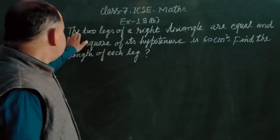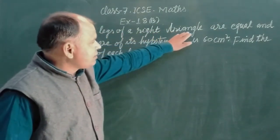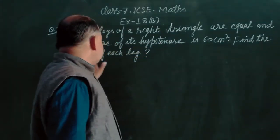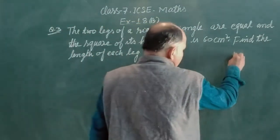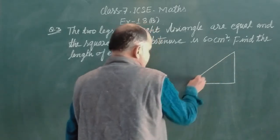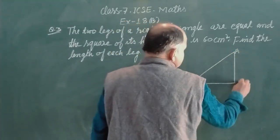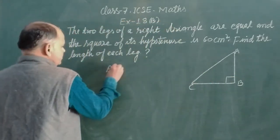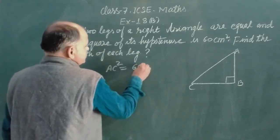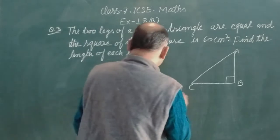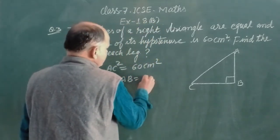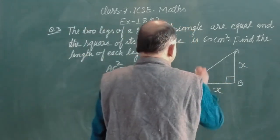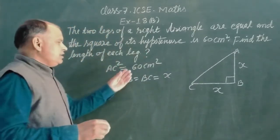Question third is: two legs of a right angle triangle are equal and the square of its hypotenuse is 60 cm square. Find the length of each leg. So it meant in this question it is given that ABC is a right angle triangle.